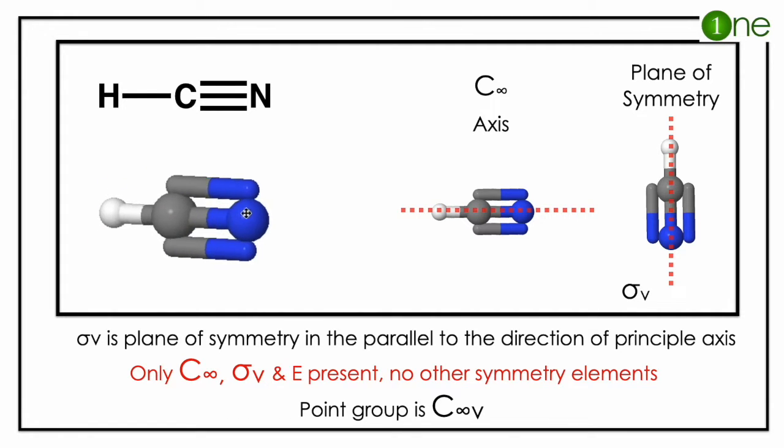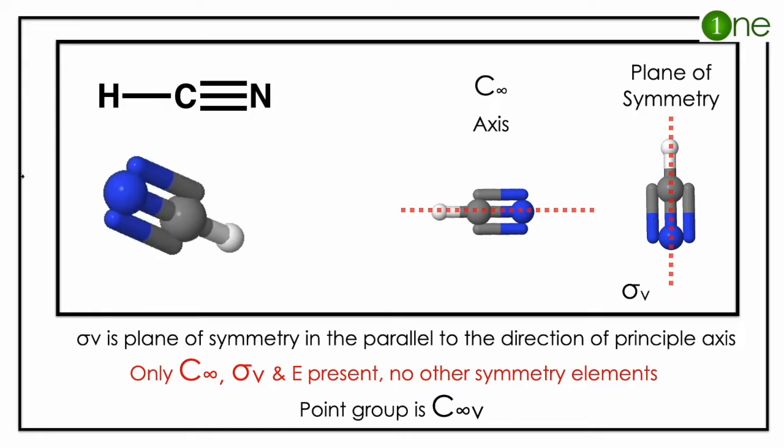So the principal axis will be C infinity, and the plane of symmetry is also along the same axis, so it is sigma v. So two symmetry elements are present: one is C infinity and sigma v.